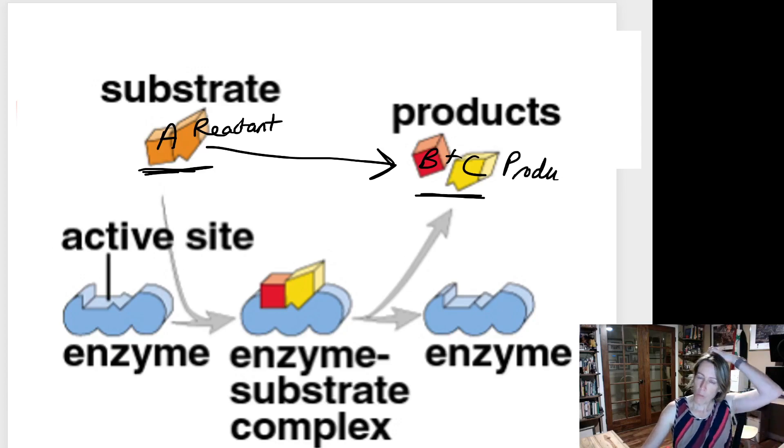We learned in previous videos that for any chemical reaction there's often an activation energy that needs to be supplied to get it to go ahead. This reaction of turning A into B and C has a certain amount of activation energy.